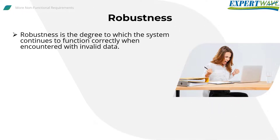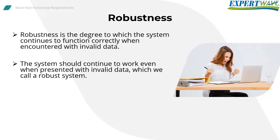Robustness is the degree to which the system continues to function correctly when encountered with invalid data. The system should continue to work even when presented with invalid data — this is what we call a robust system. For example, let's assume a system expects to receive a user's age from 20 to 50. But what if we receive an age of 60? We have a problem that might stop the user from finishing their task. Robustness means that whenever the system receives an age value larger than 50, it automatically changes or approximates it to 50.